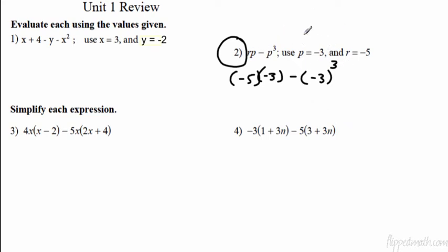There's nothing to do inside our grouping symbols, so that's done. The next step is exponents. So we need to cube, we need to raise to the third power that last negative three. So it's negative three times negative three times negative three. That equals negative 27.